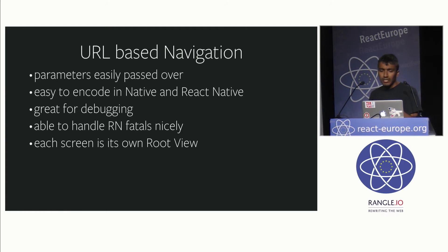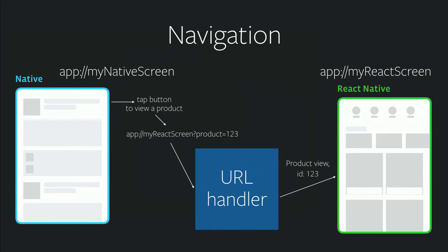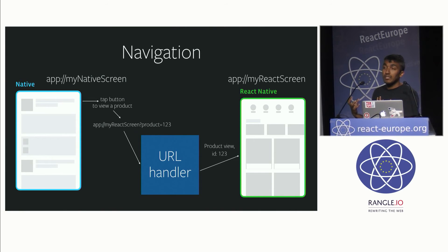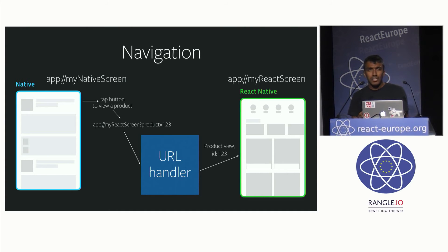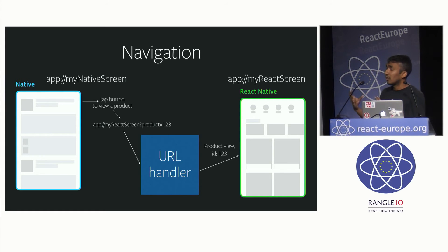To put it more concretely, on the left side we have a native screen. When a button is tapped to open a product, it turns into a URL with a product ID as a query parameter. That goes into our URL handling code, which knows how to open a screen based on its URL. You run into some other problems though — for instance, how do I tell my code that the screen I want to open is actually a modal? Or maybe the title has to be something specific, or I want an X instead of a back button.